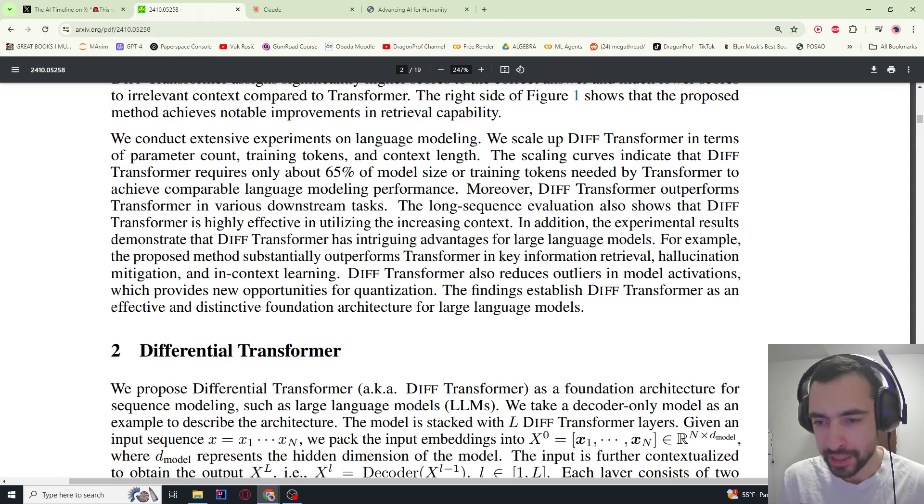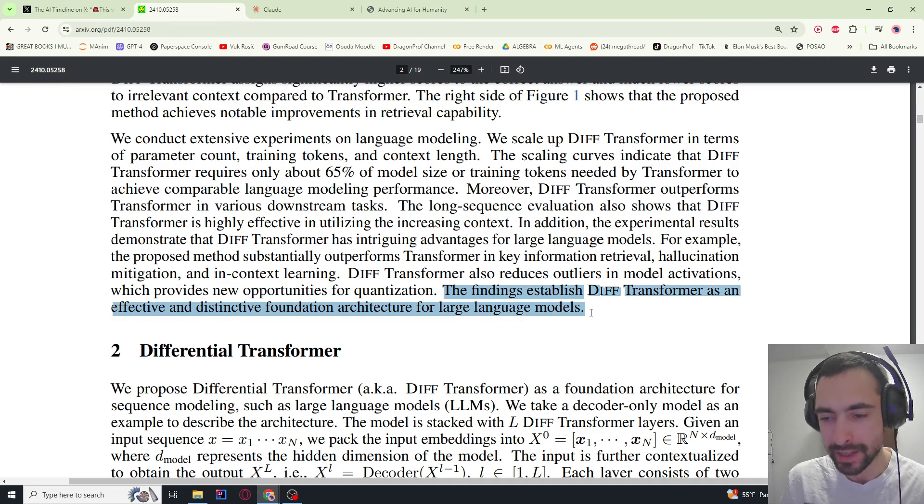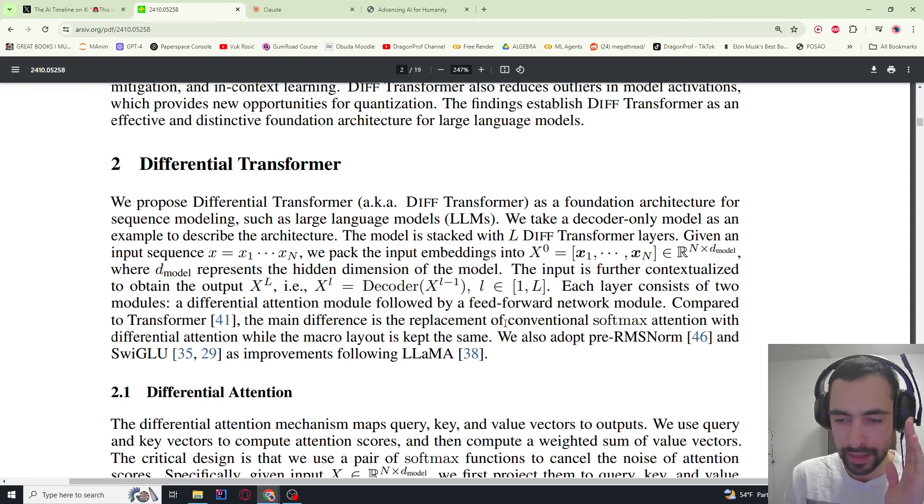It's also better in key information retrieval, hallucination mitigation, and in-context learning. It also helps reduce outliers in model activations which provides new opportunities for quantization. I talked about outliers and quantization in my previous video about sage attention, so you can check it on this channel. They basically say here that you should use a diff transformer instead of regular transformer for LLMs. The main thing they do is they replace a conventional softmax attention with the differential attention.